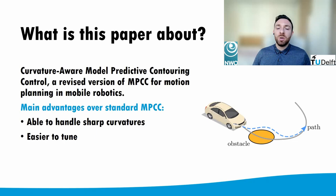The control policy is a central part in autonomous driving, as it connects the perception of the surrounding environment with actuator commands — for example, steering, accelerating, and braking. Here we present a revised version of Model Predictive Contouring Control. Over the standard formulation, our proposed method has the ability of handling sharper turns in the reference path and is also easier to tune.